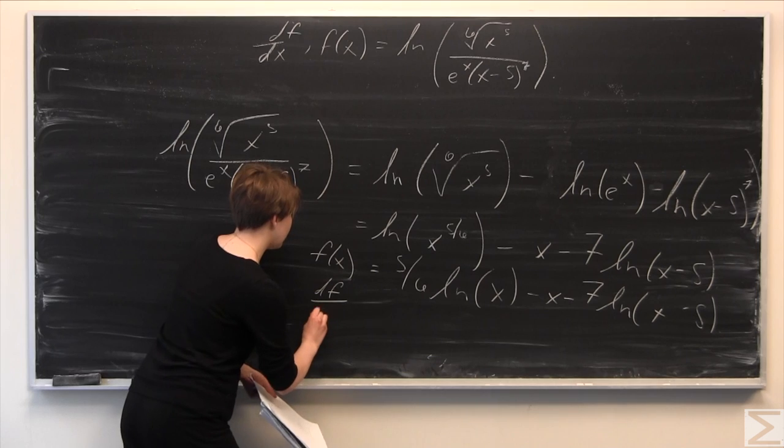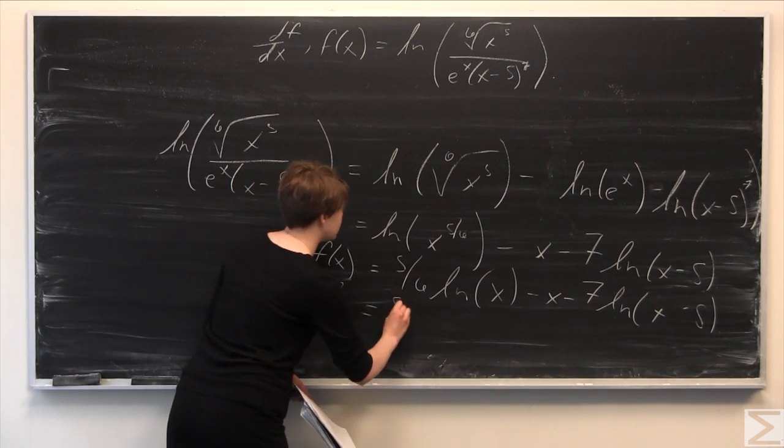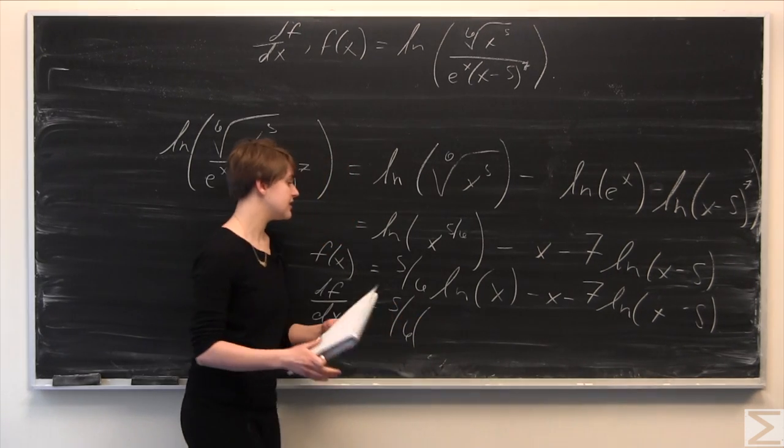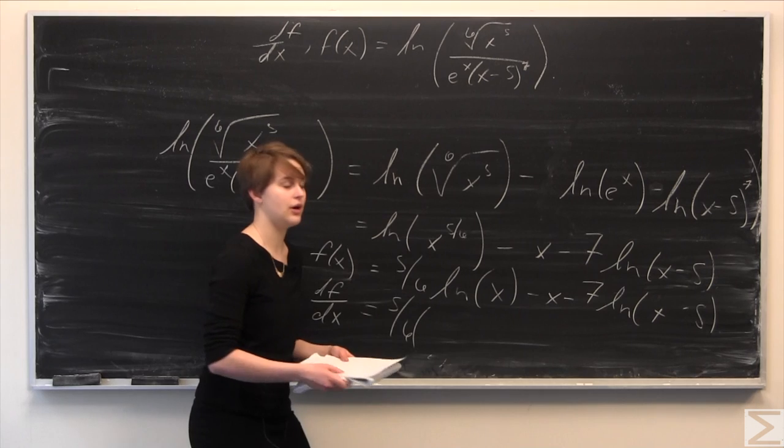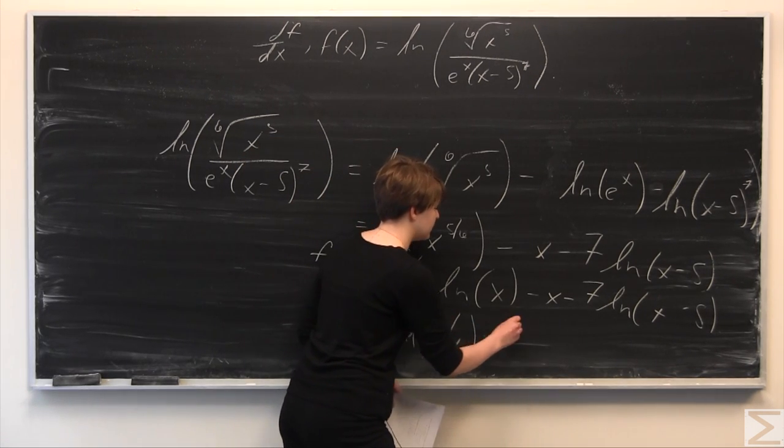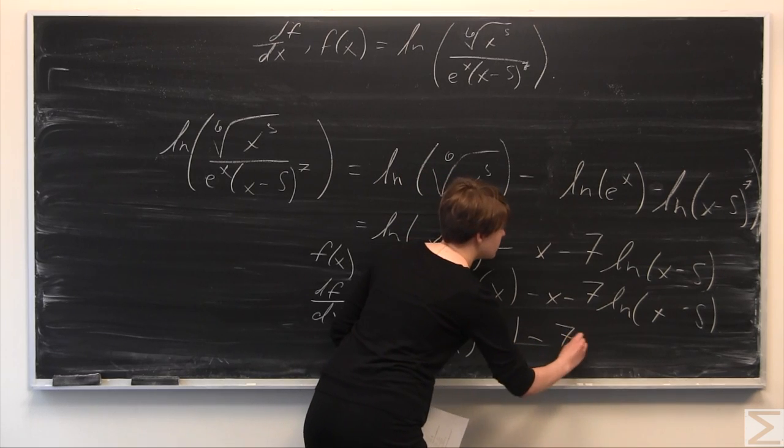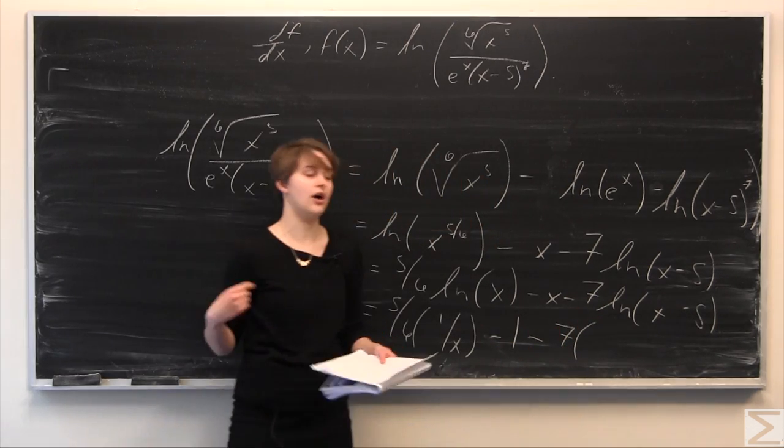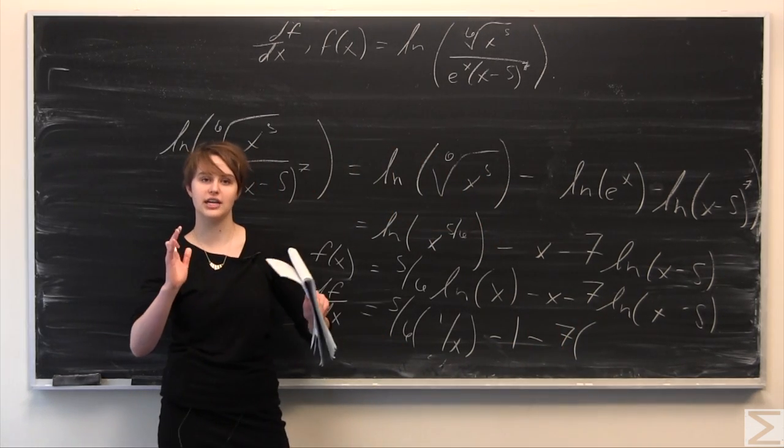df/dx is going to be equal to the constant five-sixths times the derivative of ln of x, which is one over x, minus the derivative of x is one, minus seven which is a constant times the derivative of ln of quantity x minus five, which is one over x minus five.